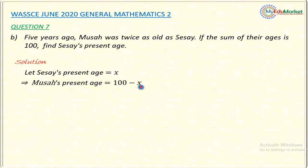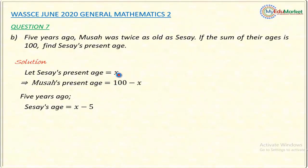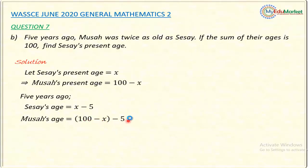Five years ago, Musa was twice as old as Cissi, so we need their ages five years back. If Cissi's present age is X, then five years ago Cissi was X minus 5. Similarly, Musa's present age is 100 minus X, so five years ago Musa was 100 minus X minus 5, which simplifies to 95 minus X. So Musa's age five years back is 95 minus X.